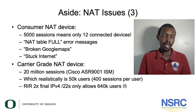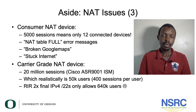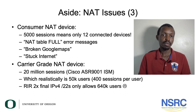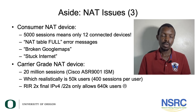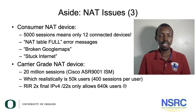If an RIR like AFRINIC hands you a /22 of IPv4 — and AFRINIC is the only RIR that still has address space — that means out of your /22 you only have 640,000 addresses, and you can serve that many users with your carrier-grade NAT device without having to seriously punish users by reducing their sessions and timing them out early. It's difficult to scale and it doesn't scale well.